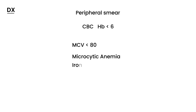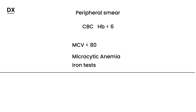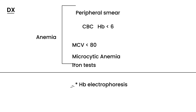Basic iron tests can show iron overload in the body — these are non-specific tests for anemia. But to diagnose thalassemia specifically, you need a special test called hemoglobin electrophoresis. This test shows the elevation of the different types of hemoglobin in the body and lets you differentiate between normal and abnormal hemoglobin — it's really the most specific test. A peripheral smear can also be done and will show information about anemia, while electrophoresis specifically identifies thalassemia.